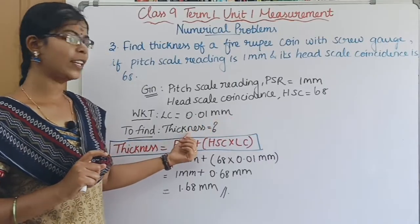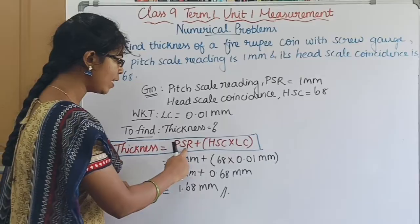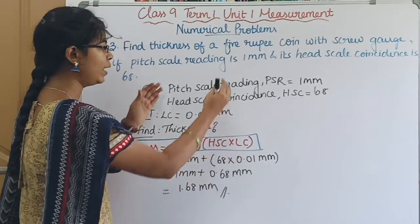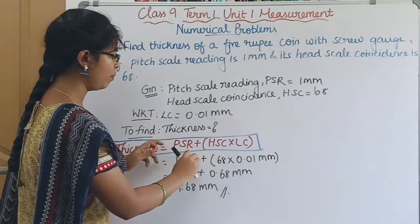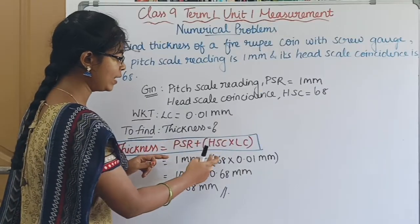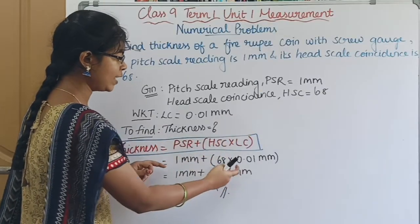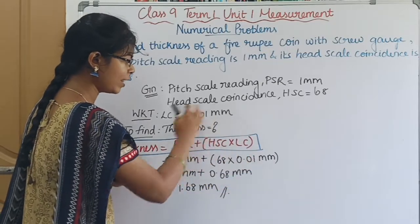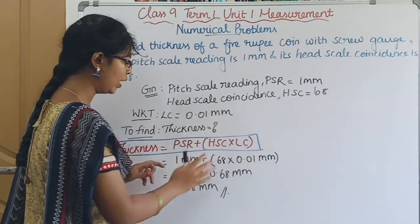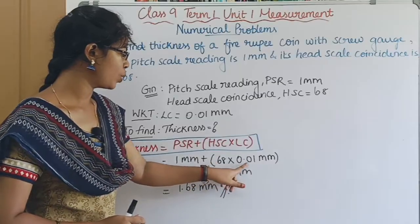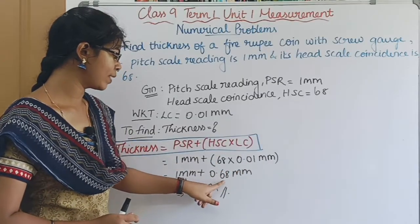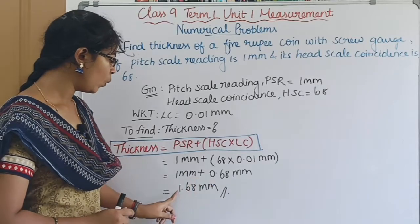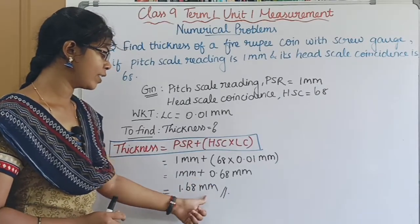The formula for thickness using a screw gauge is: Thickness = PSR + (HSC × Least Count). Substituting: Thickness = 1 mm + (68 × 0.01 mm) = 1 mm + 0.68 mm = 1.68 mm. So this is the answer.